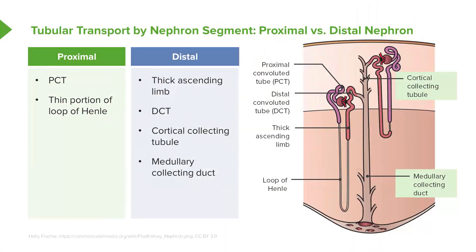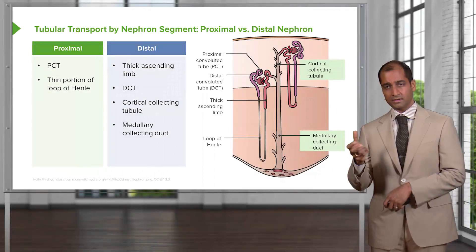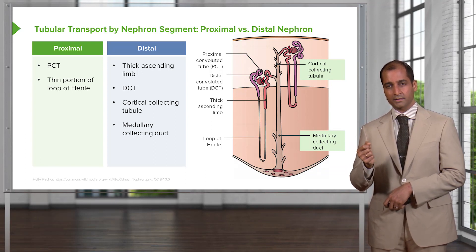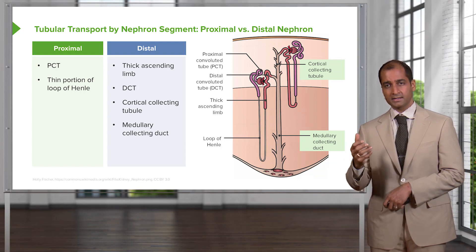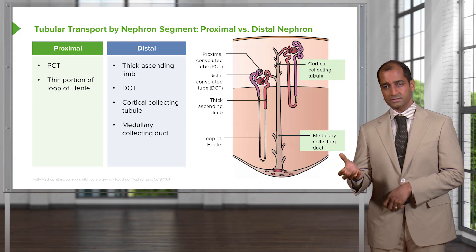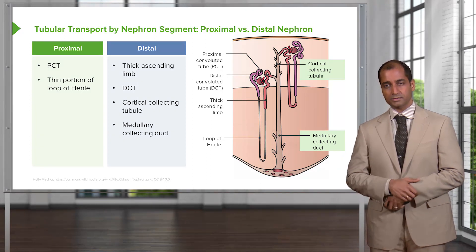The cortical collecting tubule and medullary collecting tubule — we'll group them together and call that the collecting duct. With the collecting duct, depending on what took place in the DCT — which is known as your diluting segment — you're moving solute and creating free water versus obligated water. Free water is completely free of solute, creating diluted urine. Depending on whether or not there was ADH, it will determine the tonicity of the urine as you travel through the distal tubule and collecting duct.